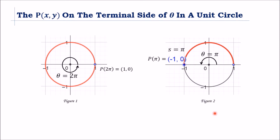In Figure 2, it shows an arc length that is half of a one full rotation. So theta is π and terminates at the negative x-axis. With this, P of π is (−1, 0).